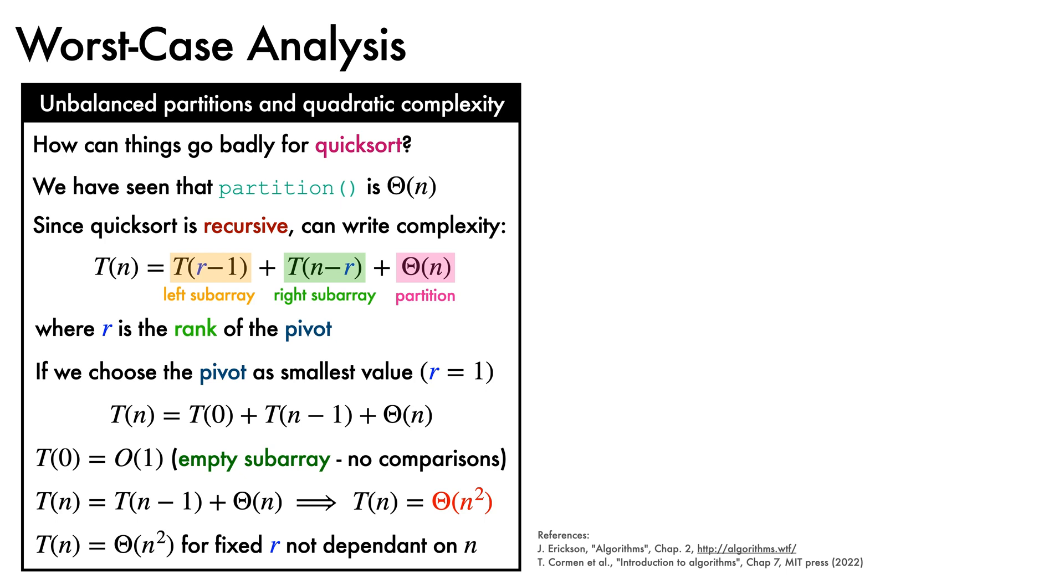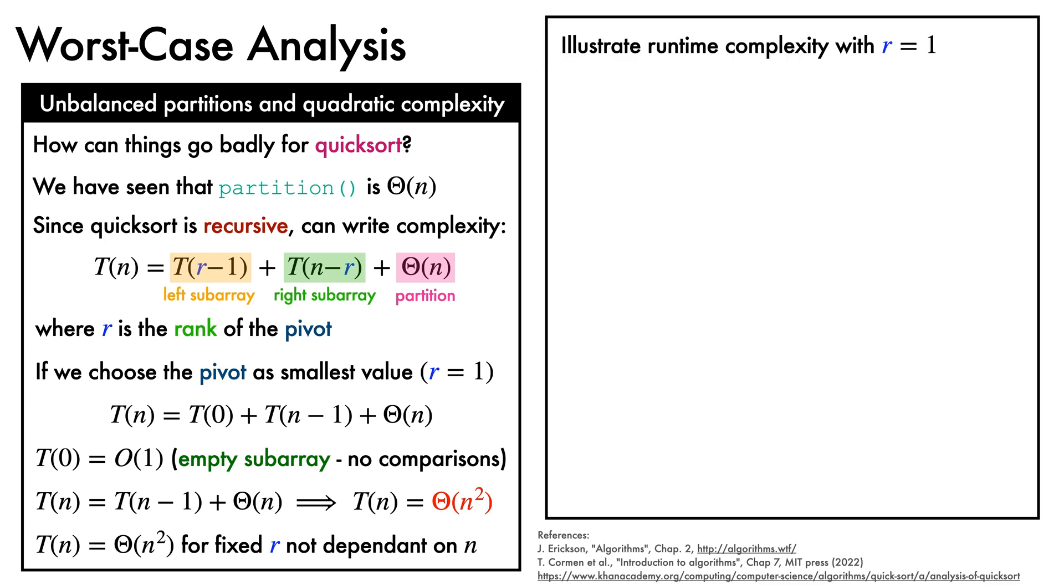To build a bit more intuition, and see how the recursion gets solved, we'll illustrate the runtime complexity when the pivot rank is 1. For this, we'll write the partition cost associated with each call, which is big theta of n, as c times n for some constant c, and we'll look at the subarray sizes considered at each level of the recursion and their corresponding cost.